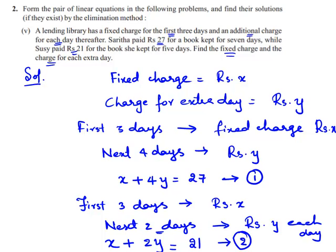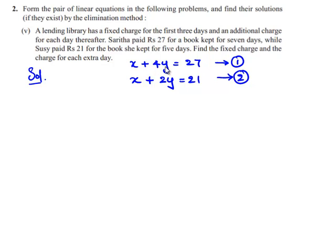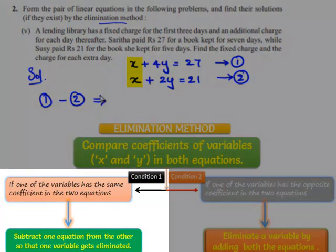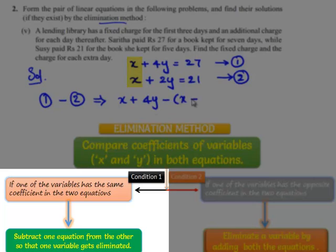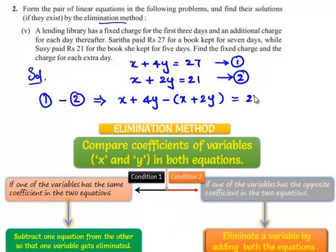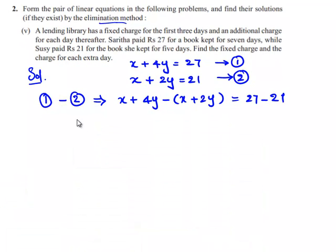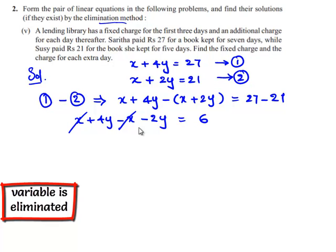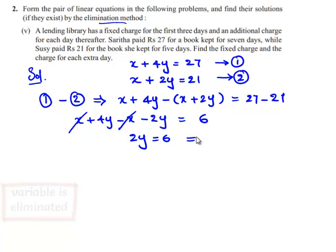We are required to find the values of x and y by solving this pair of linear equations by the elimination method. Equation 1 minus equation 2 gives: x plus 4y minus x plus 2y equals 27 minus 21. That is, x minus x cancels, and 4y minus 2y is 2y, which equals 6. This implies y is equal to 6 divided by 2, which is 3.